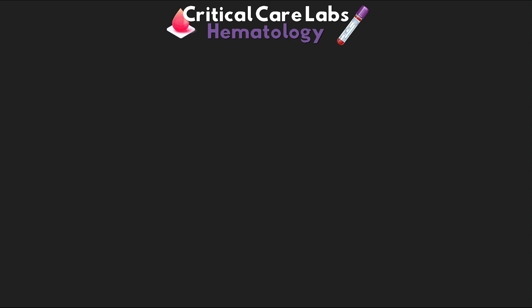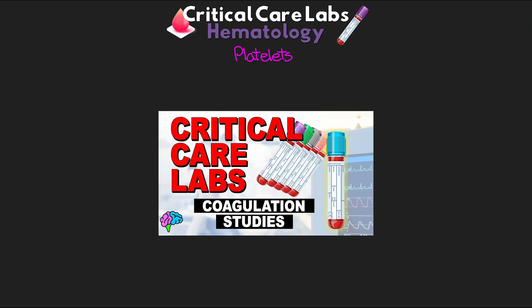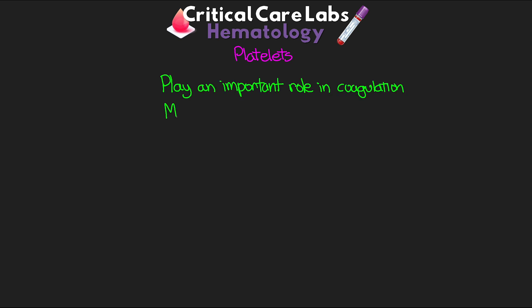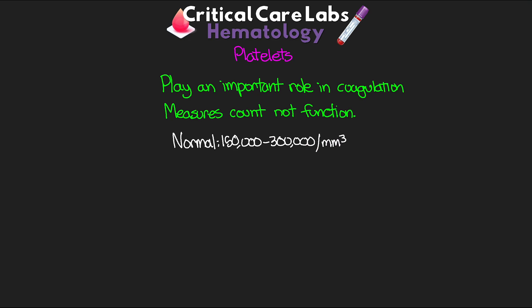The last cell we're going to talk about — the third component — is going to be our platelets. This type of cell is found in the blood and plays an important role in coagulation. This particular test measures the count of platelets, but it does not measure the function of those platelets — that requires a separate specific test. Normal is 150,000 to 300,000 per millimeter cubed. Our patients really don't face the risk of bleeding unless this value is less than 50,000.